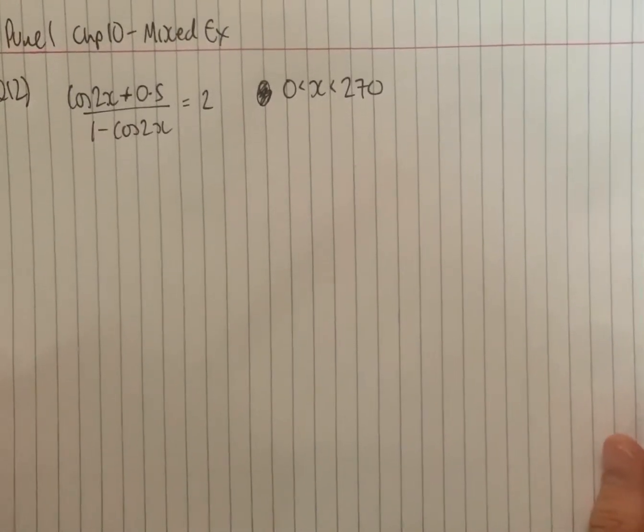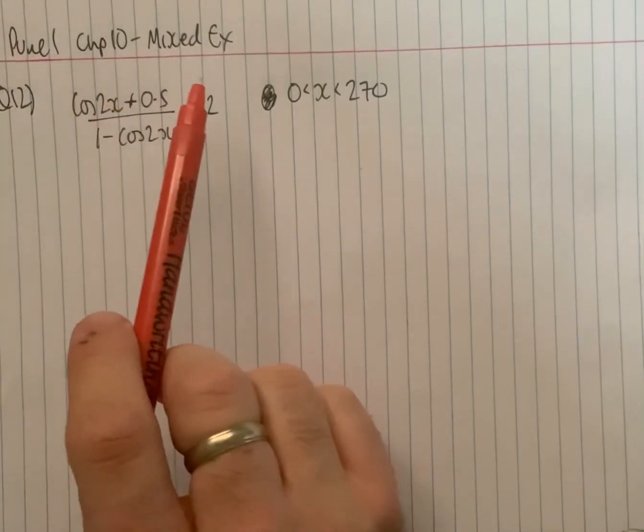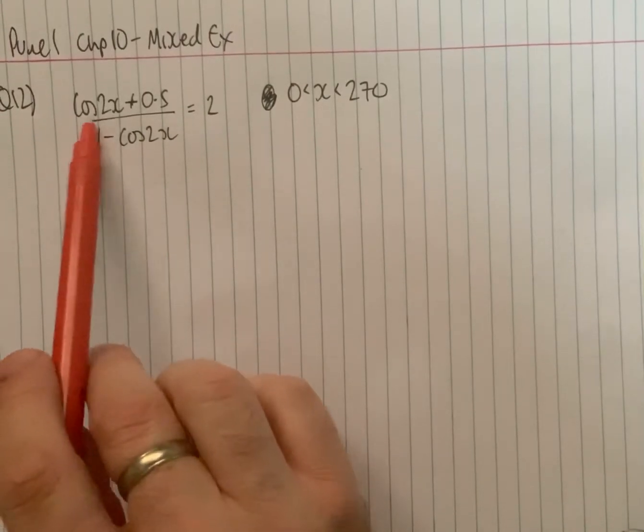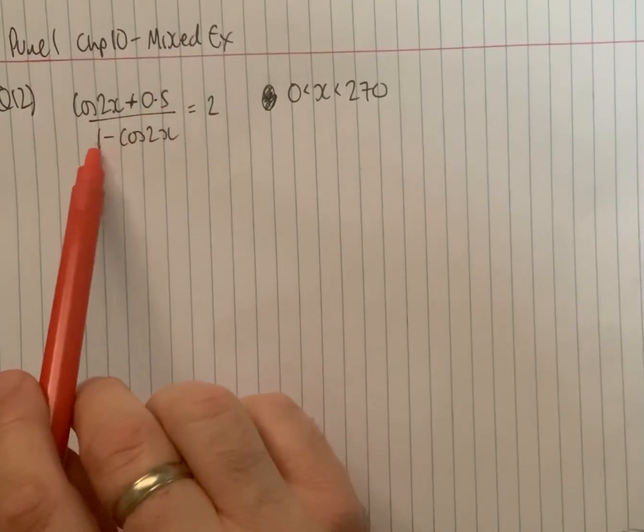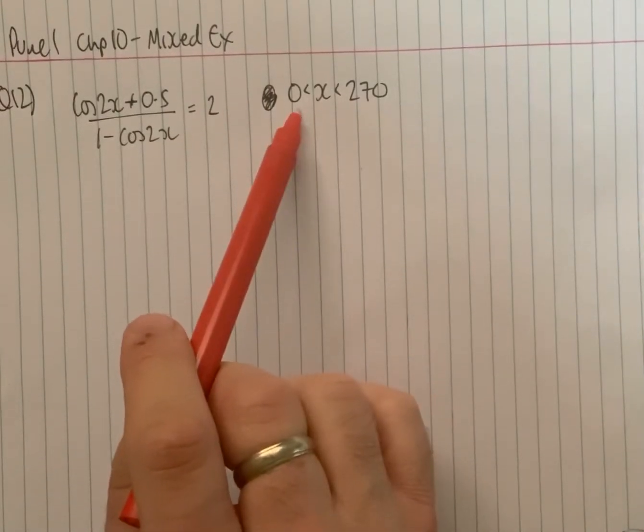Just a quick solution to a Pure 1 Chapter 10 mixed exercise question, question 12. So cos 2x plus 0.5 over 1 minus cos 2x equals 2. And you've got to find all the values between 0 and 270.